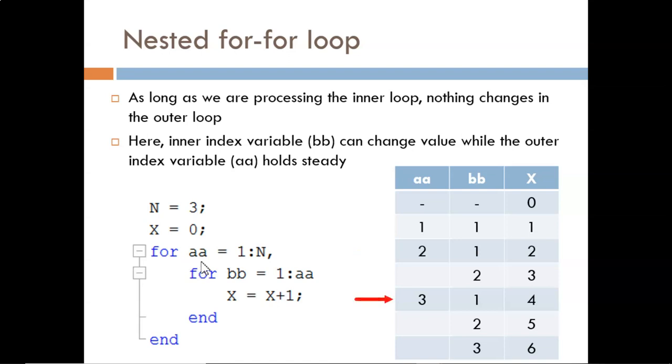AA takes on its next value of 3. Now the inner for statement says BB will range from 1 to 3. So I can fill in those three slots in the table. Each time through these three iterations of the inner loop, BB is incremented. And finally, we have run through all values of the outer index vector, and we are done with the code.